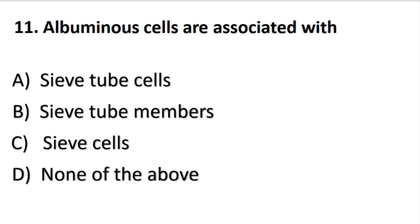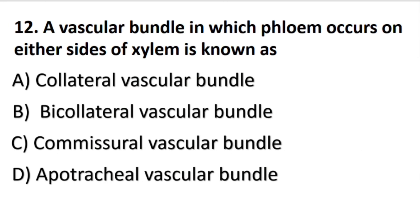Albuminous cells are associated with the answer C part: C cells. A vascular bundle in which phloem occurs on either sides of the xylem is known as a bicollateral vascular bundle.